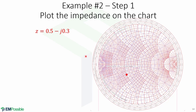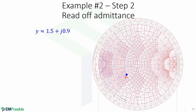For the first step, we plot the impedance on the chart. Remember that we are looking at impedance, so we plot it using the red lines — this is where the impedance is located. Now we read off the admittance from the blue lines in the admittance Smith chart. Here we can see that it is located at 1.5+j0.9. And this is how you convert from impedance to admittance using the combined Smith chart — as you can see, it is very easy.